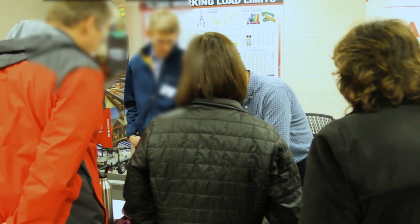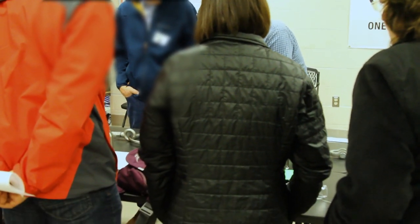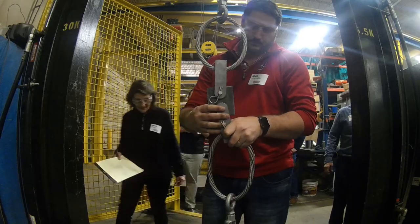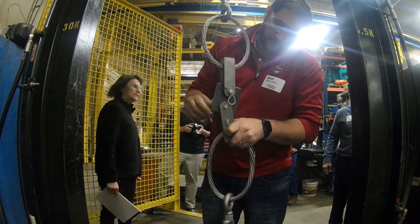The clevis hook was taken to Mazzella Companies headquarters where our engineers were tasked with using a fabricated grommet sling with an eye bolt to allow our testers to simulate the approximate forces it would experience on the Martian surface.